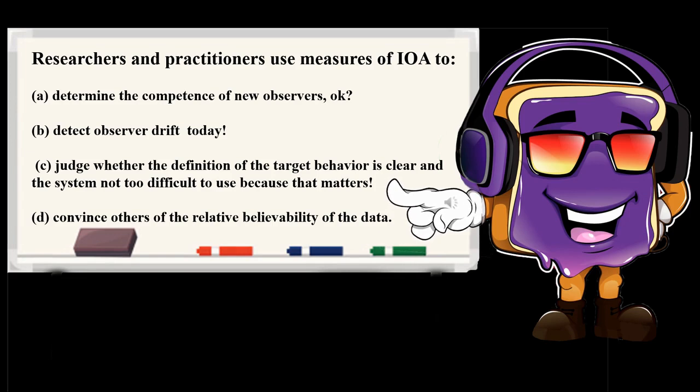Researchers and practitioners use measures of IOA to determine the competence of new observers, detect observer drift, judge whether the definition of the target behavior is clear and the measurement system not too difficult to use, and convince others of the relative believability of the data.